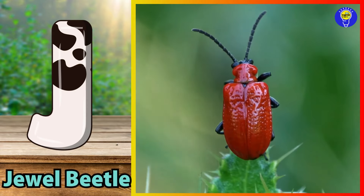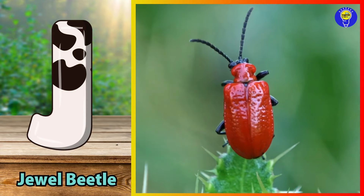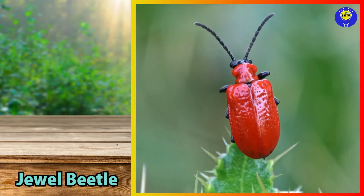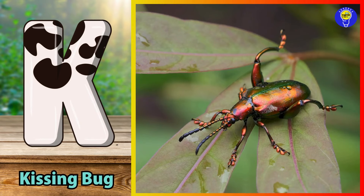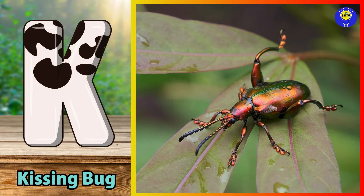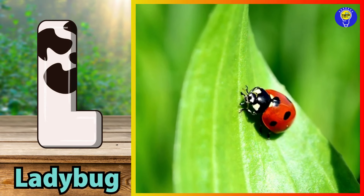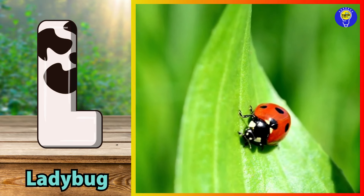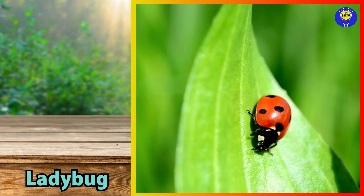J is for jewel beetle. J, j, jewel beetle. K is for kissing bug. K, k, kissing bug. L is for ladybug. L, l, ladybug.